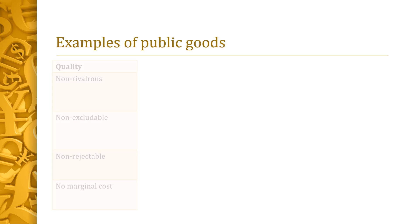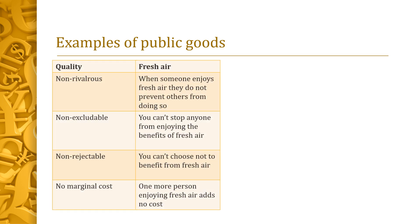Let's take a look at some examples of public goods. Some natural things such as fresh air can be considered public goods. When someone enjoys fresh air, they don't prevent others from doing so. You also can't stop anyone from enjoying the benefits of fresh air, even if those people happen to be people that run polluting businesses. It's non-rejectable — you can't choose not to benefit from fresh air. And there's no marginal cost; fresh air doesn't cost any extra per person trying to enjoy it.